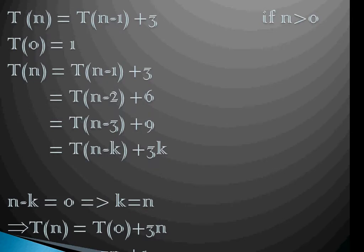So T(n) is nothing but the time taken to calculate factorial of n minus 1 which is T(n-1) plus 3 units of cost for the simple operations, and this is true for all n greater than 0.